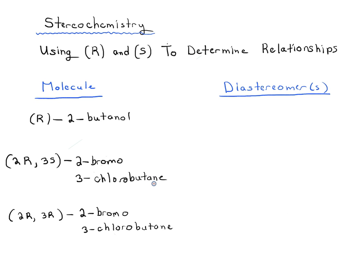We can also use this to figure out relationships between diastereomers. Diastereomers are stereoisomers that are not enantiomers. Stereoisomers where they happen to be non-superimposable mirror images are enantiomers, but in every other case — where they're stereoisomers but not exactly mirror images — those are diastereomers. There are actually a lot more ways for something to be a diastereomer than an enantiomer, especially with a large number of stereocenters.